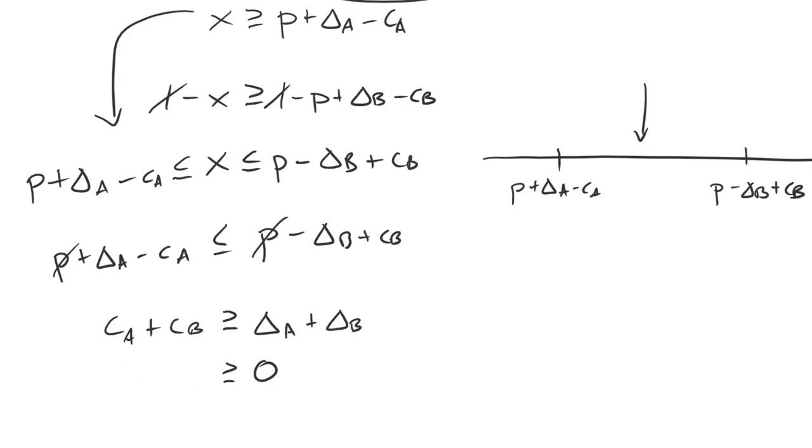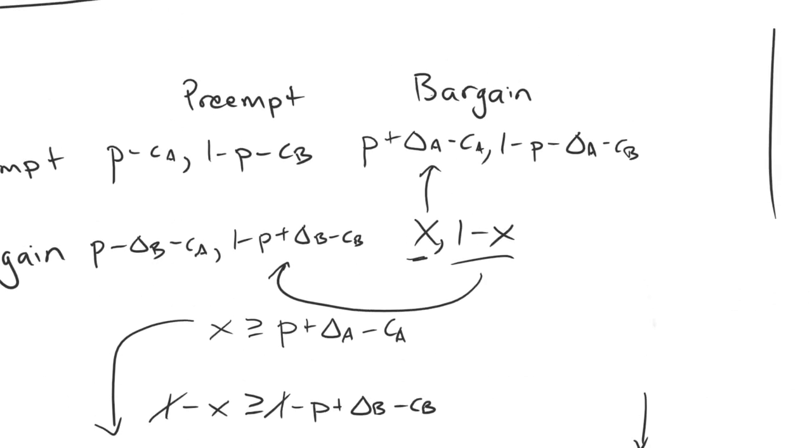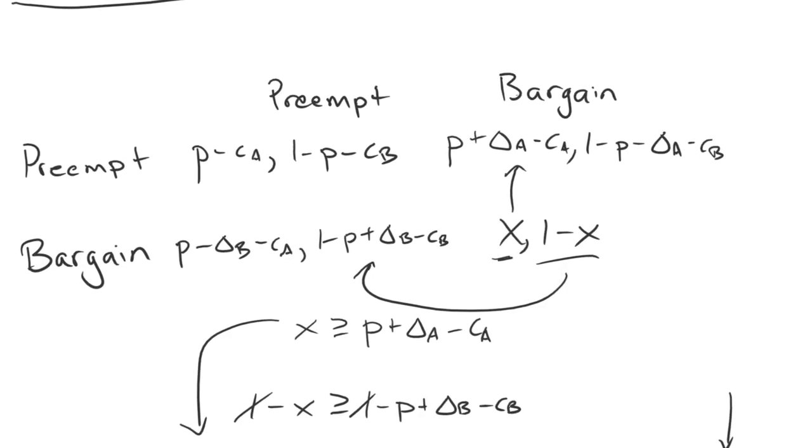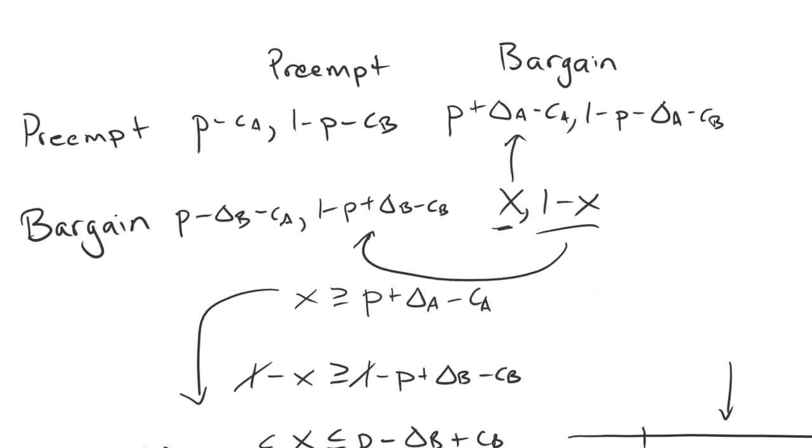Unfortunately, the answer to this question is not as straightforward as it is without the first strike advantages. Depending on those values, that inequality could hold or it might not hold. Specifically, if the sum of first strike advantages are larger than the sum costs of war, we cannot find an X value that is going to make the mutual bargaining outcome a Nash equilibrium. Which means whatever is going to happen is going to result in war.